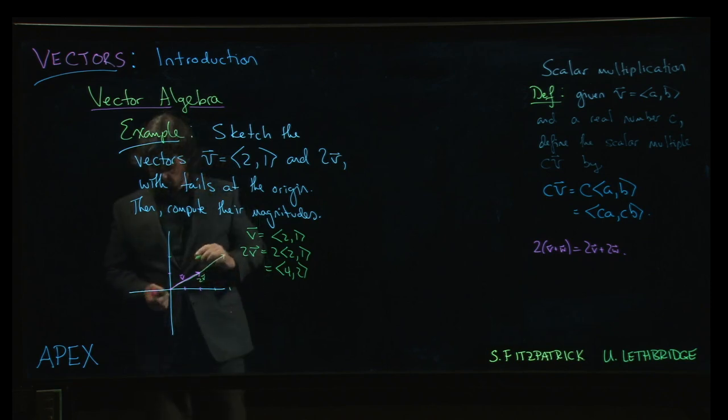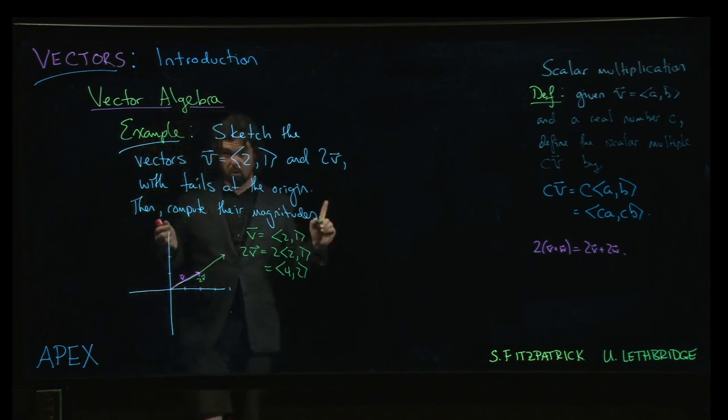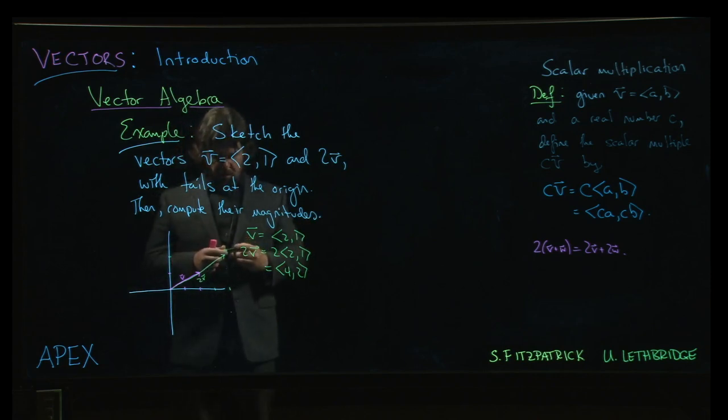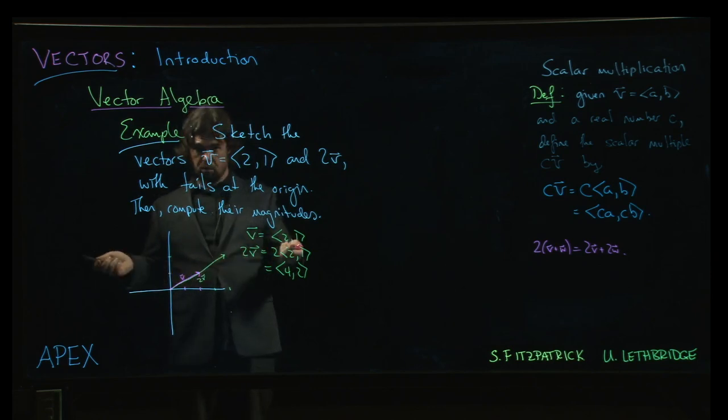So 2v, same direction, twice as long. Let's confirm that by actually computing the magnitudes. So 2v looks like it's twice as long. Is it actually twice as long?